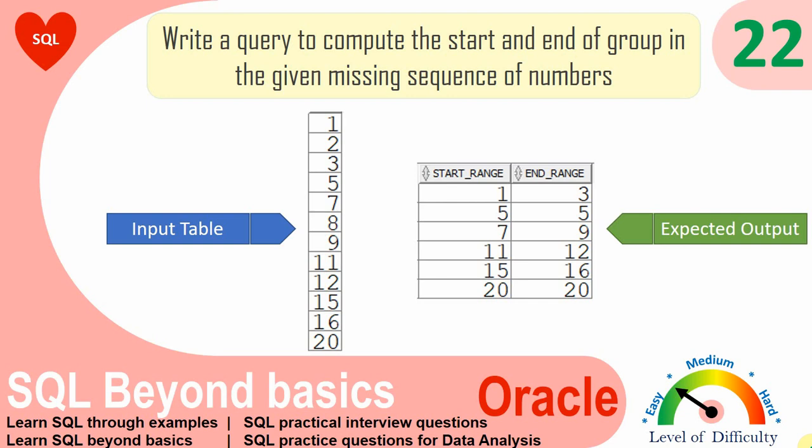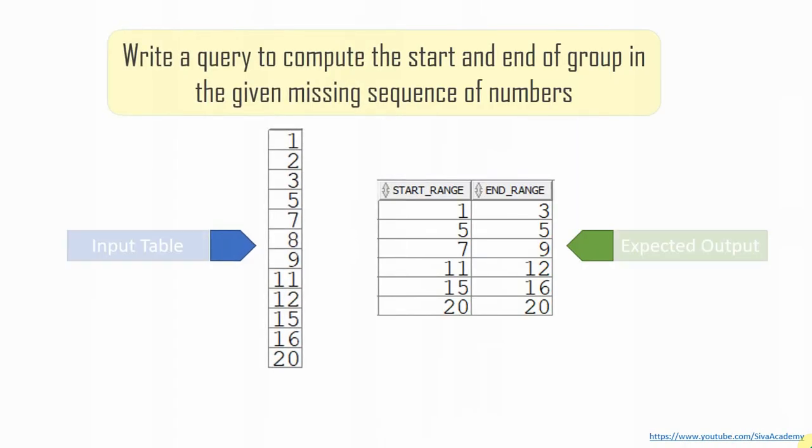So here is another interesting question which I received from one of the subscribers. The question here is, we are given a table which contains a sequence of numbers. But the thing here is that it's not a continuous sequence. There are few breaks in the sequence and the expectation is we need to write a query to group the sequence such a way that within each group we need to display the minimum and the maximum number of the group.